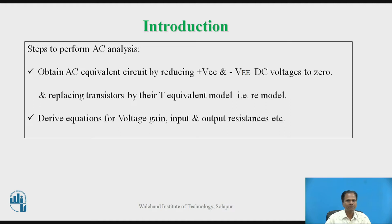Now, what are the steps to perform AC analysis? In the first step, obtain an AC equivalent circuit by reducing DC voltages plus VCC and minus VEE to 0, and replace the transistors by their T-equivalent circuit, also called the RE model. RE stands for AC emitter resistance — the small RE model of the transistor. In this way we can obtain the AC equivalent circuit for the circuit under consideration.